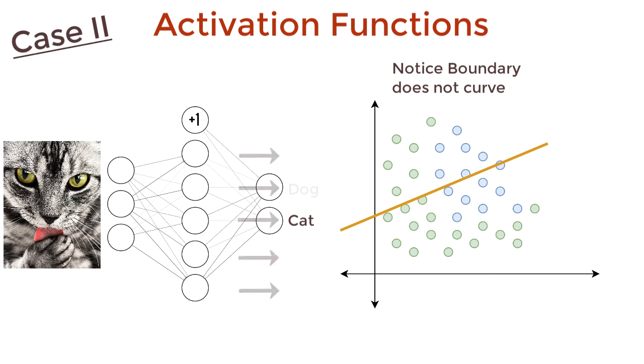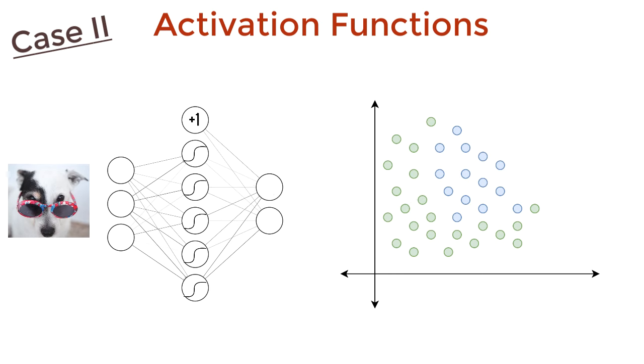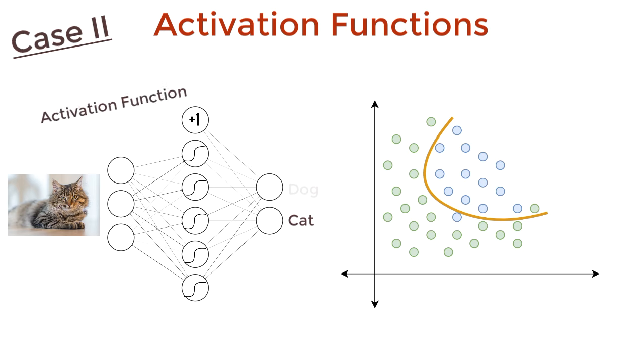So instead of just passing the data through the next layer, let's pass it through a non-linear function. Oh yeah! The network was able to classify this data with a quadratic curve. This function that we passed the data through is called an activation function.